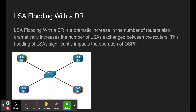LSA flooding with the DR is the process the network uses to manage adjacencies. One router sends out LSA packets to the central switch, which then distributes them throughout the system. The other routers send back packets, which helps smooth the running of the system.